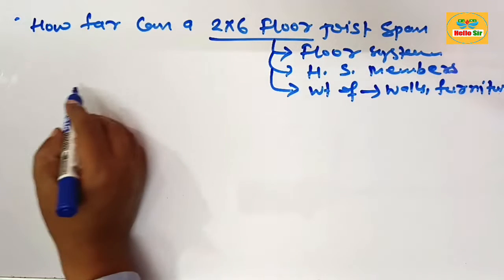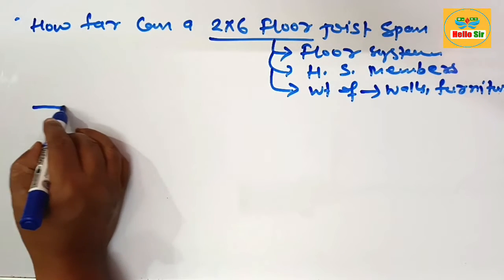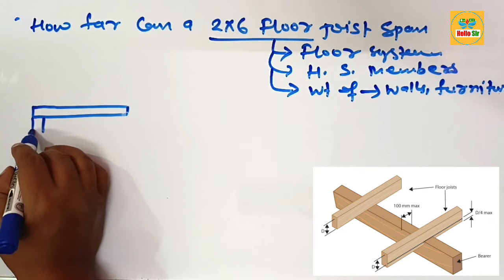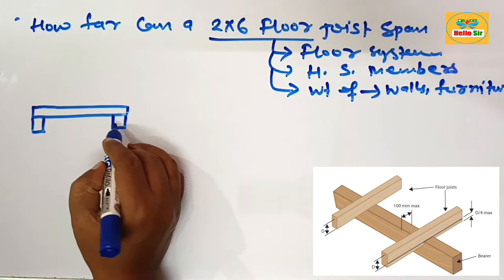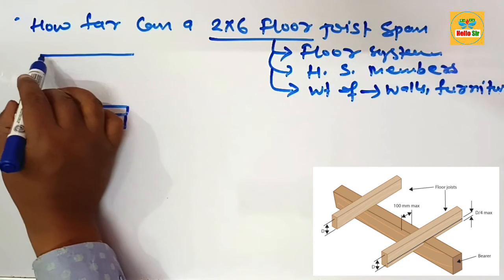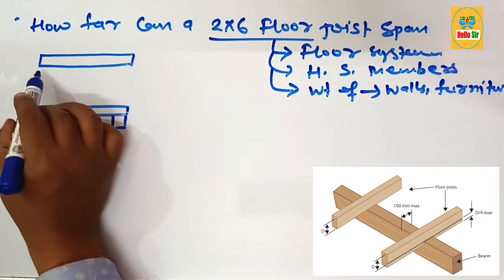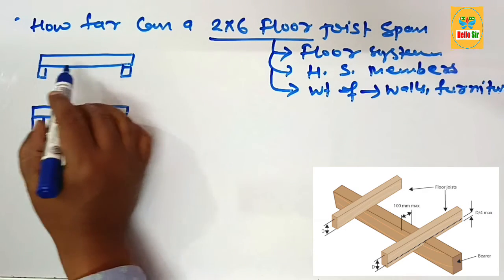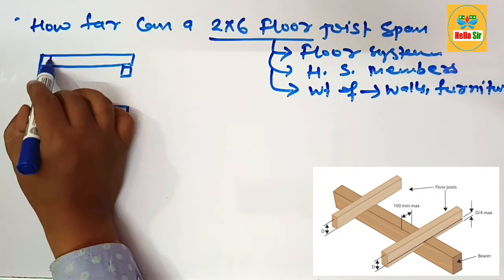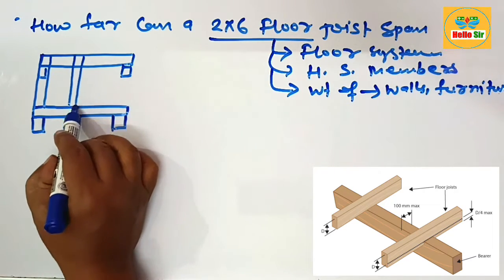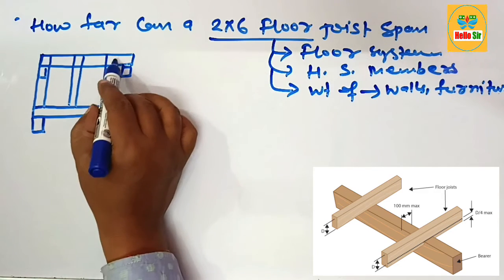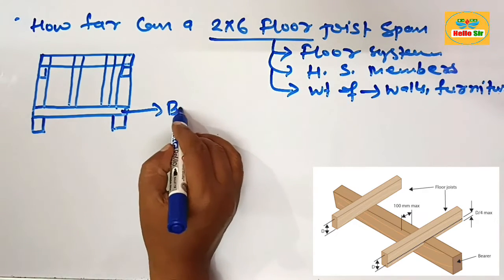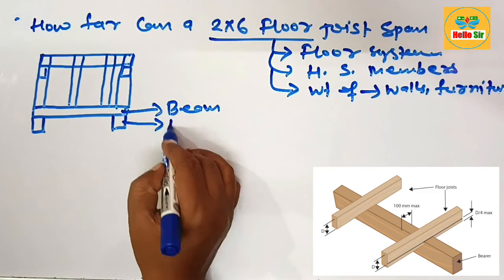First, here we make a rough diagram for the floor system. Suppose this will be a beam structure put on the foundation, and this one is a second beam. This one is the foundation, and your floor joist runs horizontal to this structure like that. This is your floor joist running horizontally and connecting the beam structure. This one is your beam, this one is foundation.